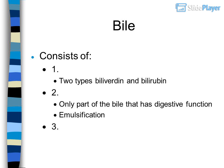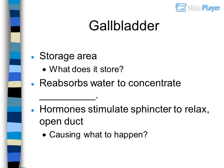Liver digestive functions: metabolism of carbohydrates, lipids, and proteins. It secretes bile through the bile duct into the small intestine. Bile consists of components including biliviridin and bilirubin. Only part of bile has digestive function: emulsification. Gallbladder is a storage area that reabsorbs water to concentrate bile. A hormone stimulates the sphincter to relax and open the duct, causing bile to be released.